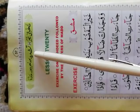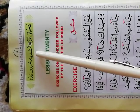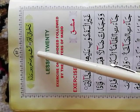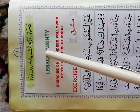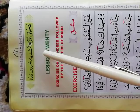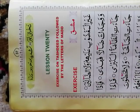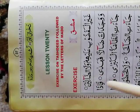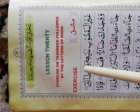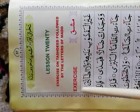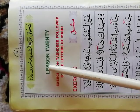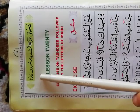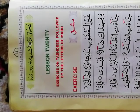Tashdeed — kisko kehte hain? Jab kisi harf pe tashdeed hoti hai, toh woh harf hum dho baar padhte hain. Huroof-e-Madd — woh huroof hain jinho hum khinch kar padhte hain.